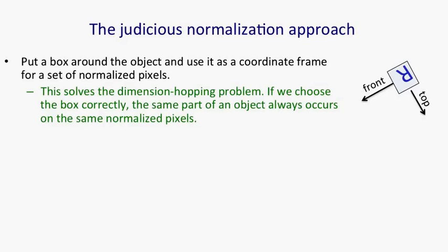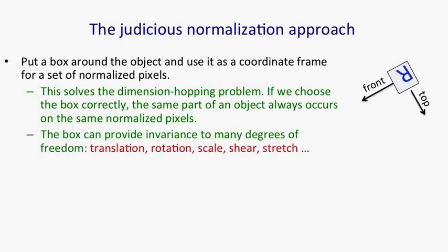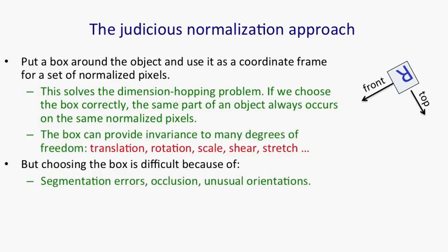Putting a box around a rigid shape solves the dimension hopping problem. It gets rid of the effect of changes in viewpoint. If we choose the box correctly, the same part of an object will always occur on the same normalised pixels. It doesn't have to be a rectangular box. We can provide invariance to not only translation, rotation, and scale, but also things like shear and stretch.